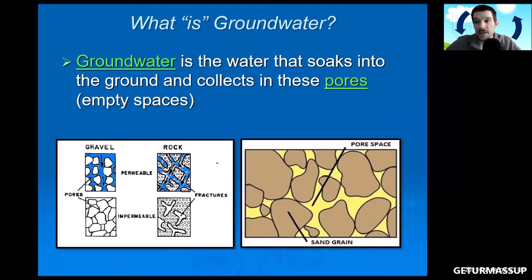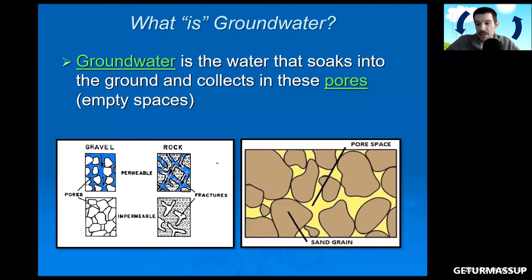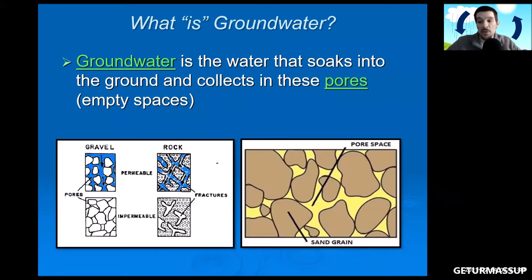The first thing you want to write down is the definition of groundwater: it is the water that soaks into the ground and collects in pores — pores are just empty spaces. If we look at the image, we have gravel and rock, both of which have pores, and the water is filling those pores, meaning that rock and gravel are permeable. We'll get to permeable and impermeable in just a second.